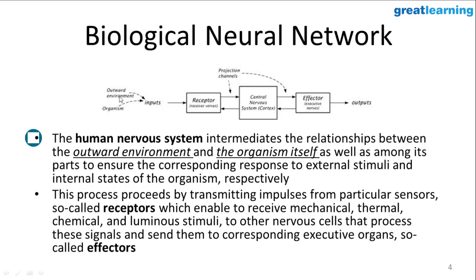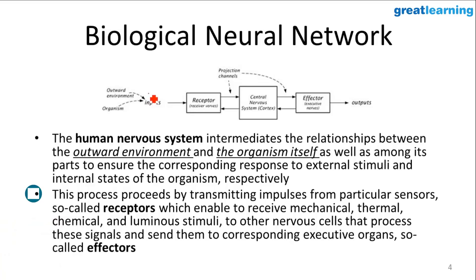In our brain, we get input from an external environment or from an internal stimuli. This input is received by the receptor cells, which transmit the signal to the central nervous system — our brain. The signal is processed, and the output is sent to effector cells. Based upon the output, we react to the signals we receive. This is how a biological neural network performs.